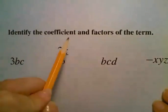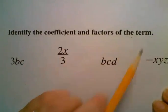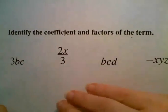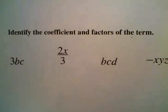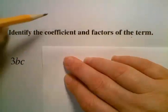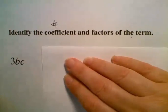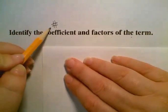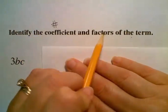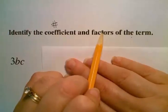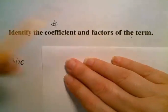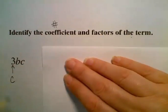We want to identify the coefficient and the factors of the term. Now remember that the coefficient, let's do this one at a time here. The coefficient is the number part. It's the number part. That's not a hashtag. That's a number symbol. And the factors are the numbers and variables that are multiplied together. So here is our coefficient. And then we have 3 factors. 3 factors.